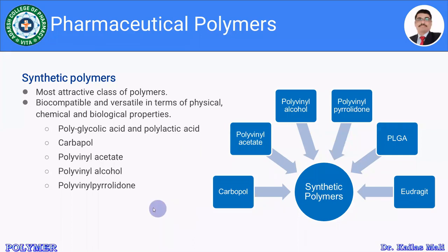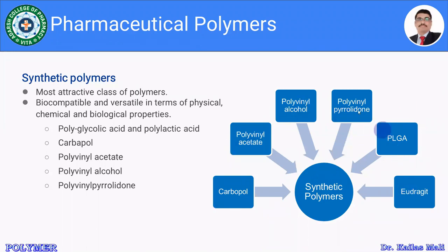Synthetic polymers are those which are purely synthesized in the laboratory. This is an attractive class of polymer — biocompatible and versatile in terms of its physical, chemical and biological properties. The list of synthetic polymers used in designing controlled drug delivery systems includes Carbapol and Eudrazit, which are very important and widely used polymers.